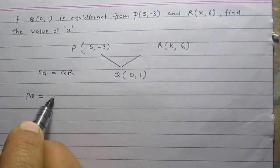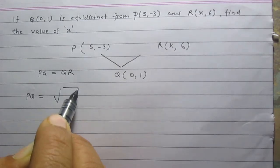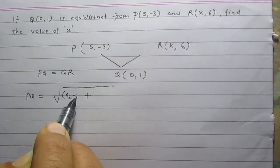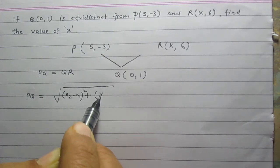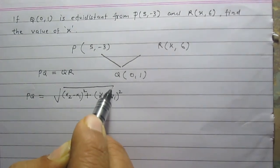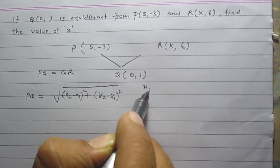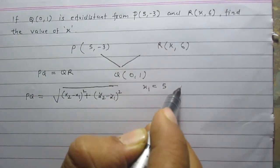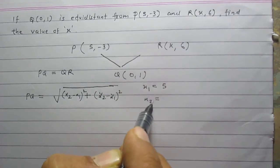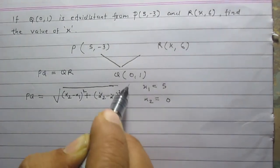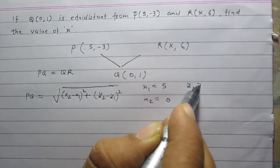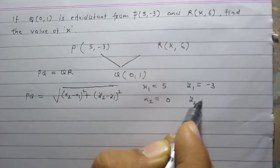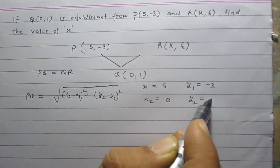The distance PQ using the distance formula is equal to the square root of the sum of (x2 minus x1) whole square and (y2 minus y1) whole square. Here, x1 is the x coordinate of point P and it is 5. x2 is the x coordinate of point Q and it is 0. y1 is the y coordinate of point P and it is minus 3, and y2 is the y coordinate of point Q and it is 1.